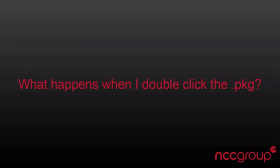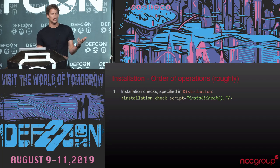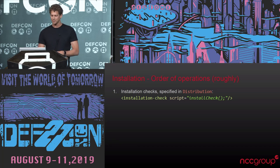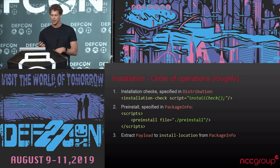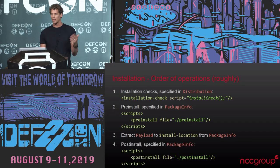Let's walk through what happens when you actually launch the installer with one of these packages. You start with the distribution file, then we work through the code execution flow. It checks to see if there's any installer check — if so, it looks for the JavaScript that's going to be there, defined within the XML file between script tags, and executes that JavaScript. Then if the package info said there were any pre-installation scripts, it runs the pre-installation script. Then you install the files, extract the payload into the install location, and then do the post-installation scripts if any were specified.